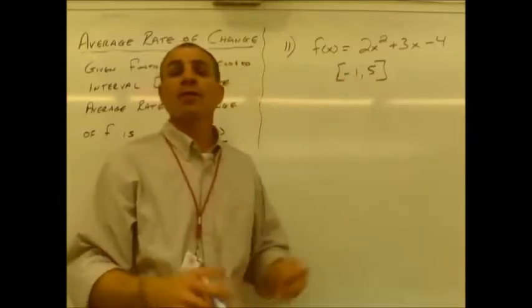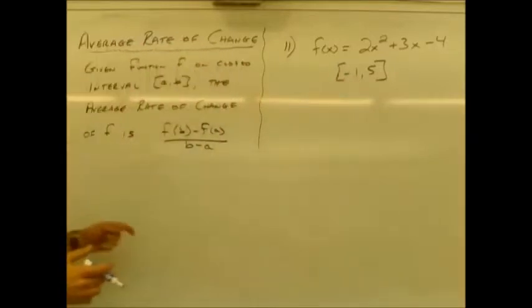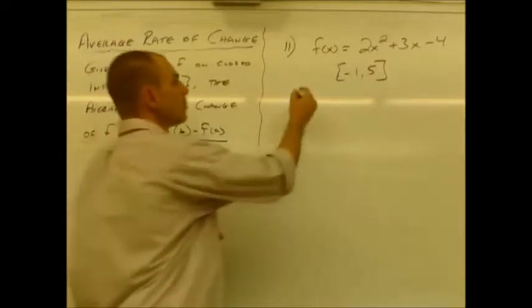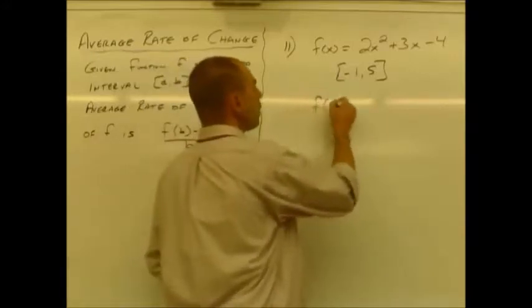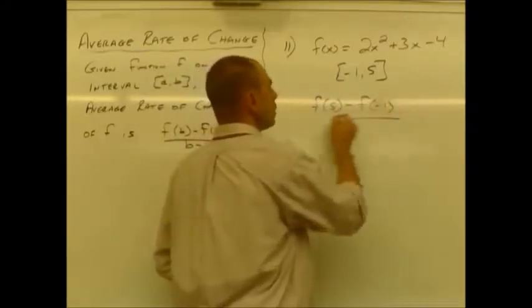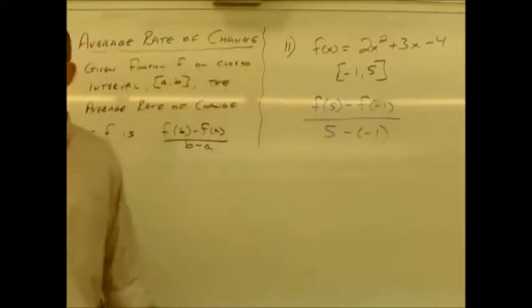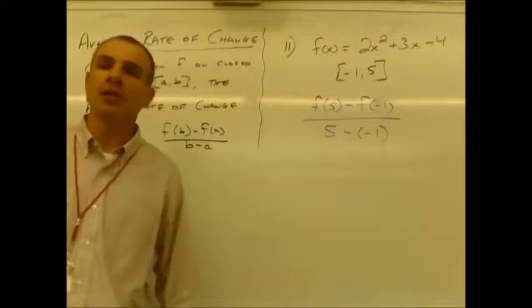There we go. Okay, so same formula as before. We're looking at f of b minus f of a over b minus a. So we need f of 5 minus f of negative 1 over 5 minus negative 1. That's our setup. Denominator is all set to go.